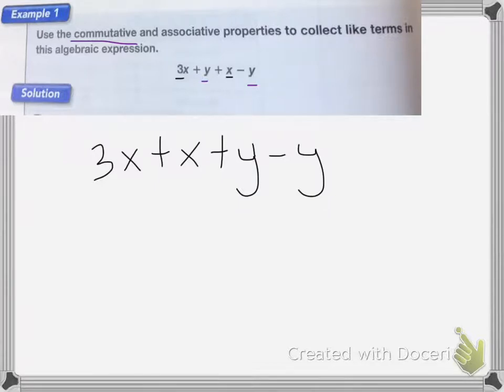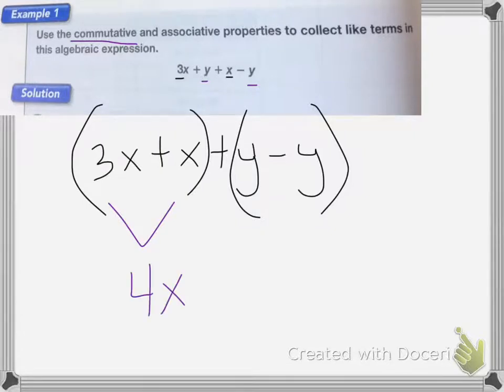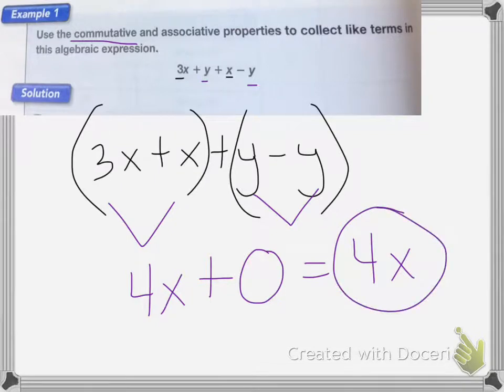Then I'm going to use the associative property to group the terms. So if I add 3x plus another x, I'm going to end up with 4x plus y minus y is going to equal 0. So my answer is going to be 4x.